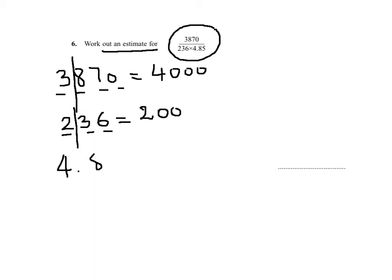The last one is 4.85. Again, I have three significant figures, I only want one significant. I look at the second significant which is 8, and this is above 5, therefore I round up and I'll get 5. So my calculation will become 4000 over 200 times 5.